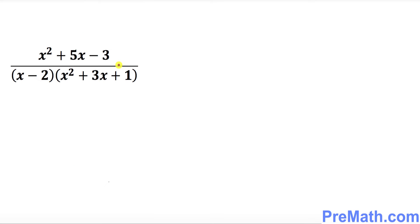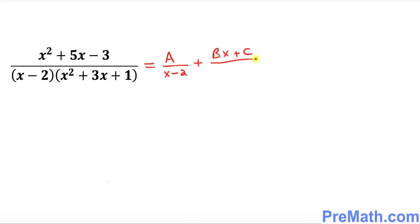Let's go ahead and set this rational expression for partial fraction. We can write A over (x minus 2), which is our linear part, plus (Bx plus C) over our quadratic part, which is x squared plus 3x plus 1.